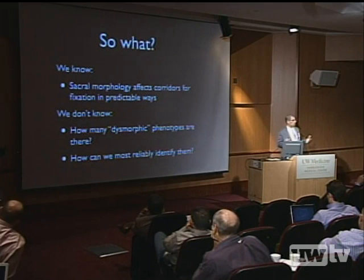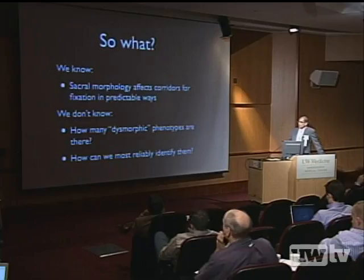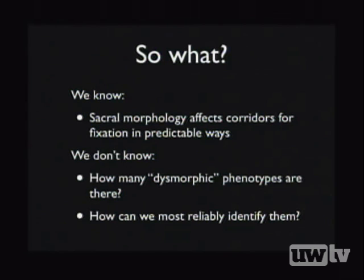Sacral morphology affects corridors for fixation in predictable ways, and this is understood by most surgeons. However, key questions remain: how many dysmorphic phenotypes exist — is it a continuum or are there distinct clusters as seen in much of anatomy — and how can they be most reliably identified?